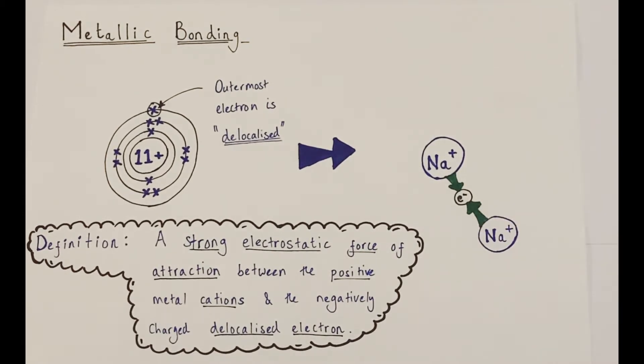As a definition, we say that metallic bonding is a strong electrostatic force of attraction between positive metal cations and negatively charged surrounding delocalized electrons. And these extend throughout the metallic structure.